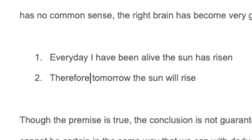The second type of reasoning is inductive reasoning. Unlike deductive reasoning, this uses the right brain. It observes patterns in the world and makes predictions — something we do all the time, and have become very good at, without even knowing we're doing it. An example of an inductive argument: point one, every day I have been alive, the sun has risen; point two, therefore, tomorrow, the sun will rise.